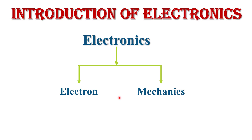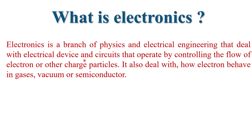Under the influence of an applied electric or magnetic field, this is called electronics. The definition of electronics is: electronics is a branch of science, physics, and electrical engineering that deals with electrical devices and circuits that operate by controlling the flow of electrons or other charged particles. It also deals with how electrons behave in gas, vacuum, or semiconductors.